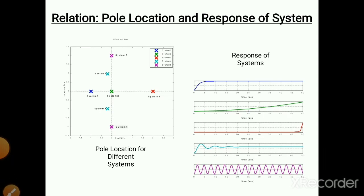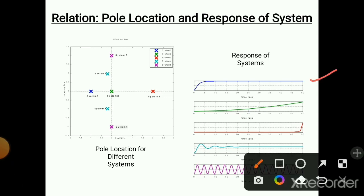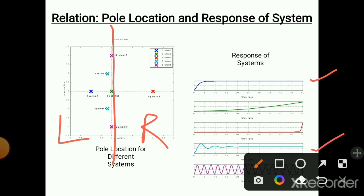Looking at graphs 1 and 4, the poles are on the left-hand side of the graph. If we consider the middle line, the left portion represents stable behavior. For graphs 1 and 4, the poles are on the left side and the system is more stable — there are very few peaks and we get a straight line. So when poles are on the left-hand side, the system is stable; when poles are on the right-hand side, the system is unstable or marginally stable.